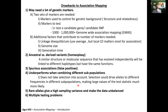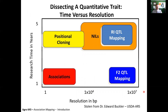There are some drawbacks: we need a lot more markers. Spurious associations — false positives — are a lot more likely in association mapping, mainly due to population structure and rare alleles. When you combine different subpopulations, results underperform. Rare alleles have a high sampling variance, making the data unbalanced, and multiple testing problems compound these issues.